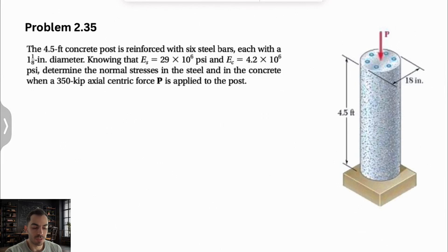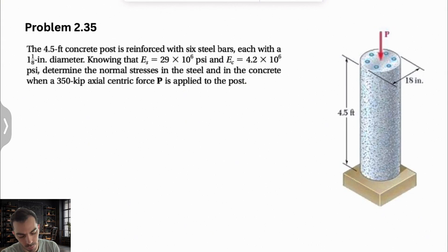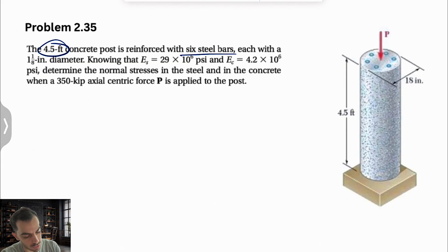Welcome back. We're going to be solving another question from the second chapter of Mechanics of Materials by Beer & Johnston. This one, we have a 4.5-foot concrete post that is reinforced with six steel bars inside of it.